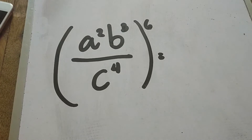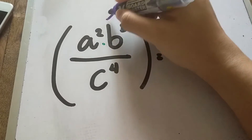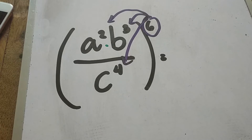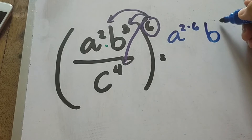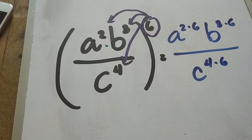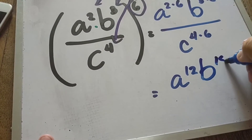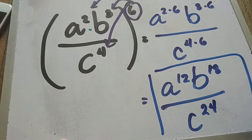We apply power of a product and power of a quotient because the operations present in this expression are both multiplication and division. We distribute the exponent 6 to all exponents present in the group. So we have a raised to 2 times 6, b raised to 3 times 6, all over c raised to 4 times 6. Simplifying: a raised to 12, b raised to 18, over c raised to 24 — that is the final answer.